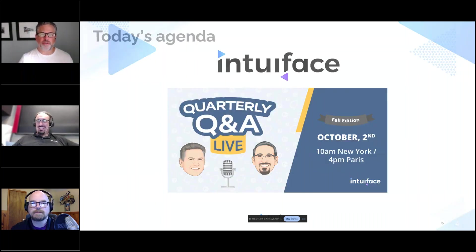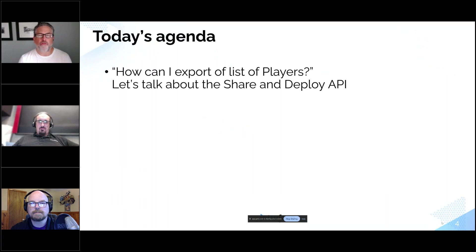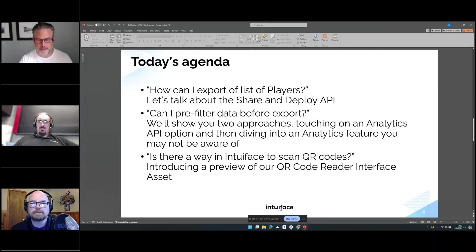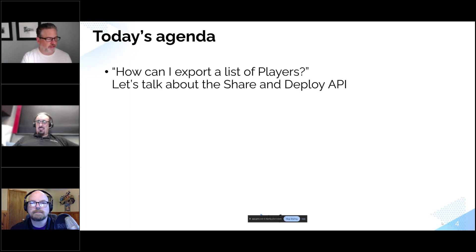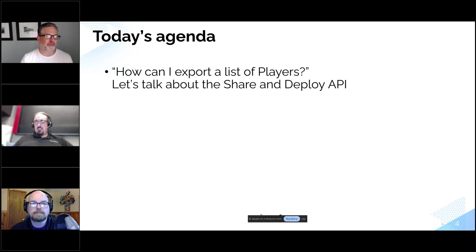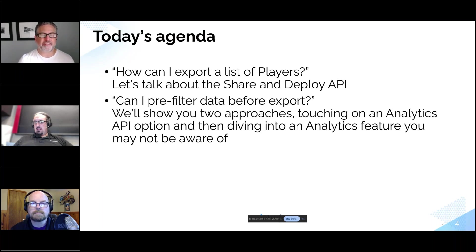So let's walk through today's agenda. Ryan will join us to talk about a support question: how can I export a list of players? In the Share and Deploy console you can see all your players, but somebody wanted an exported list and there's no export button. There actually is a way to do that using the Share and Deploy API, which some of you may not even know exists. Ryan will walk us through what that API is, how it works, and how you can export a list of players.